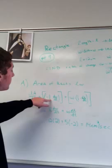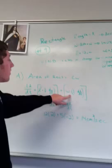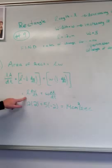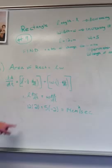So dA/dt — you apply the product rule, which is the first one, L, times the derivative of the second one, which is just 1, multiplied by dW/dt, plus the second one times the derivative of the first one, which is just 1, times dL/dt.